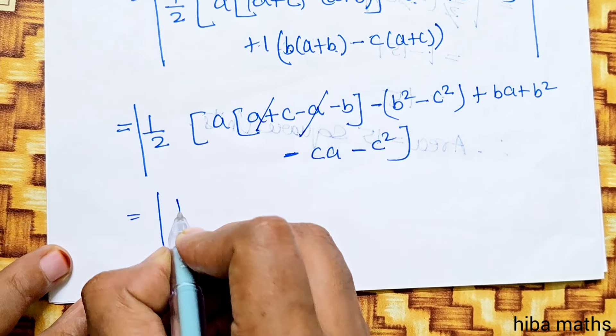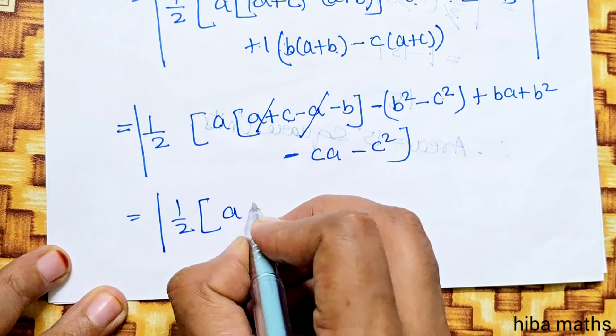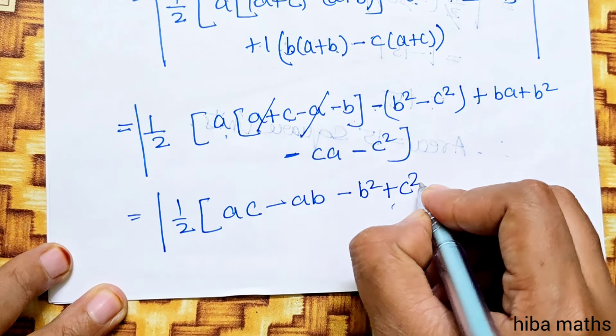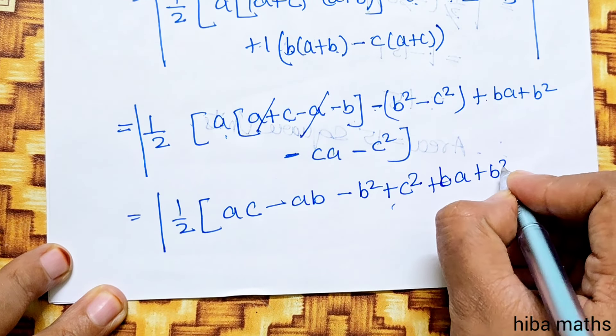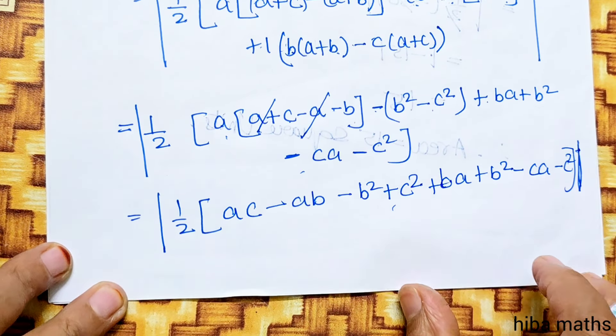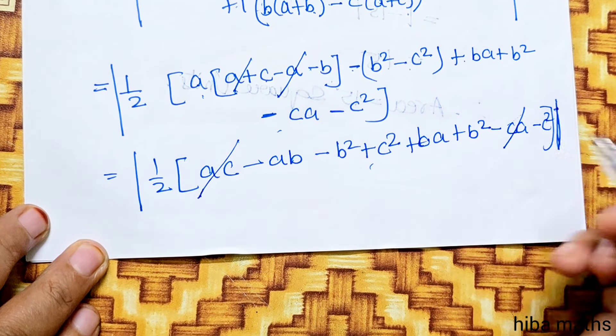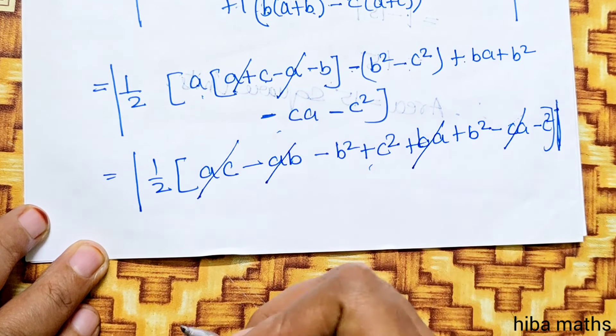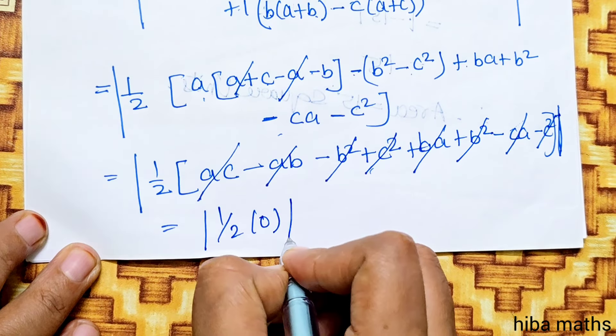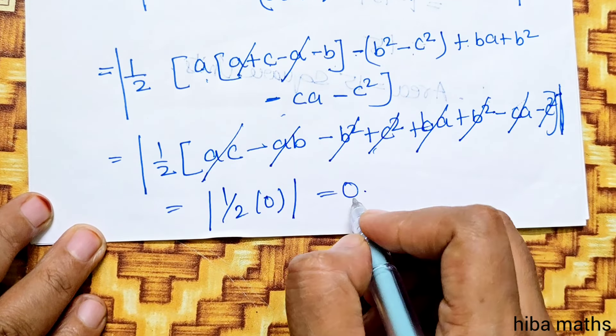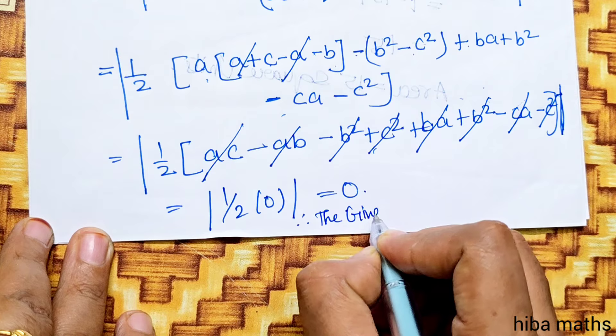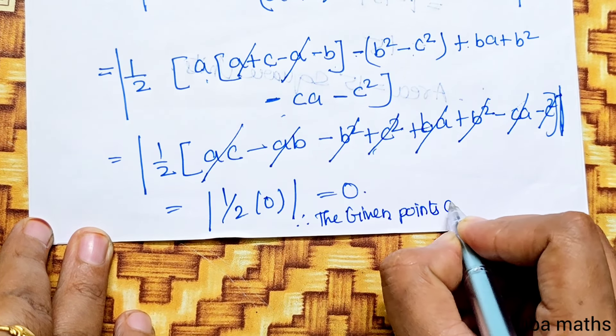Simplifying: equals 1/2 times [a(c-b) minus (b+c)(b-c) plus (ab+b² minus c²-ca)]. This becomes 1/2 times [ac minus ab minus b² plus c² plus ab plus b² minus ca minus c²]. All terms cancel, giving 1/2 times 0 equals 0. Therefore the points are collinear.